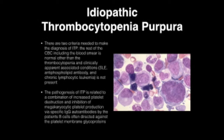The next topic is idiopathic thrombocytopenia purpura, or ITP. Two main criteria are needed to diagnose ITP: the rest of the CBC including the peripheral blood smear is normal other than the thrombocytopenia, and clinically apparent associated conditions such as SLE, antiphospholipid antibody syndrome, and chronic lymphocytic leukemia are not present. The pathogenesis of ITP involves increased platelet destruction and inhibition of megakaryocyte platelet production via specific IgG antibodies directed against platelet membrane glycoproteins.